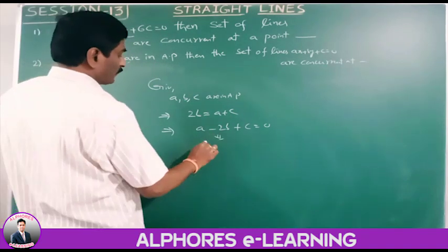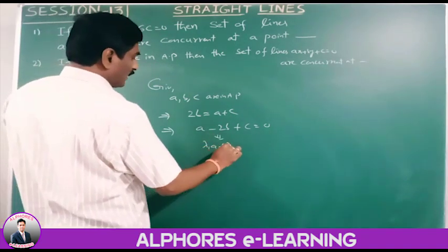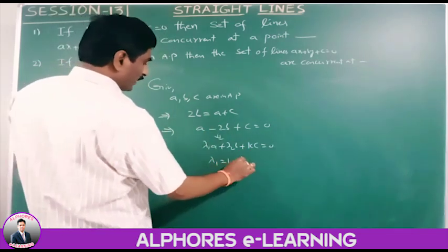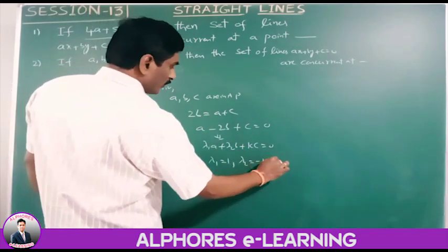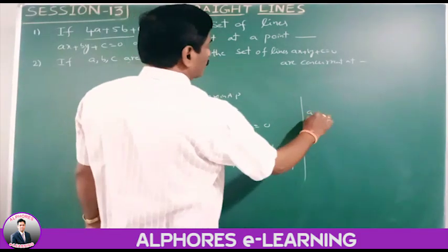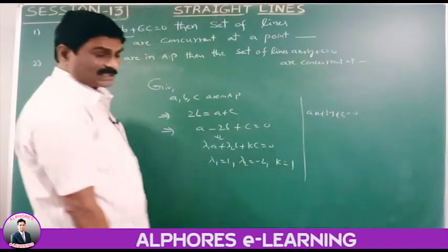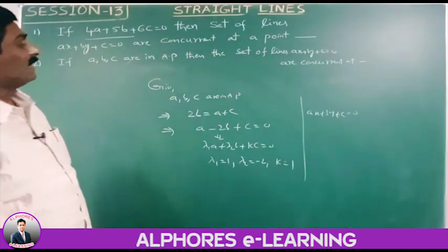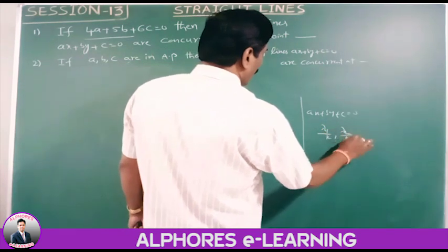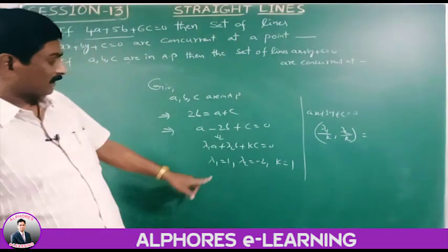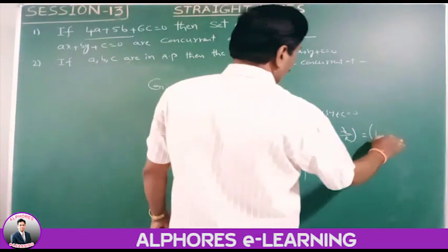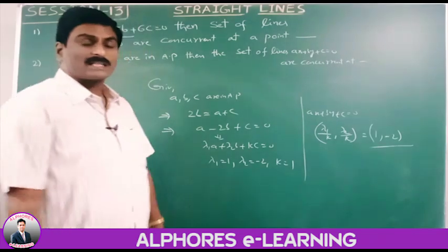This is in the form lambda-1·a plus lambda-2·b plus k·c equals 0, where lambda-1 equals 1, lambda-2 equals minus 2, and k equals 1. The family of lines is ax plus by plus c equals 0. By the direct formula, the point of concurrency is (lambda-1/k, lambda-2/k) equals (1/1, minus2/1) equals (1, minus 2).